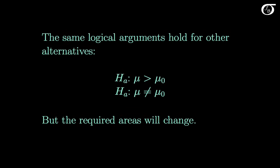We did all of the power calculations under the alternative hypothesis that mu is actually less than the hypothesized value. The same logical arguments hold for other alternatives, like greater than or not equal to the hypothesized value, but the required areas will change. So when faced with one of these power calculations, it's important to think through it carefully to make sure you're finding the correct areas.